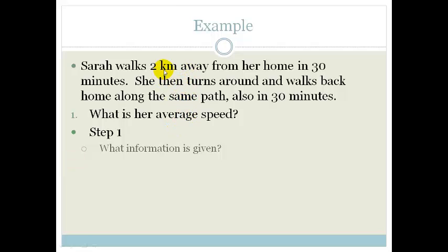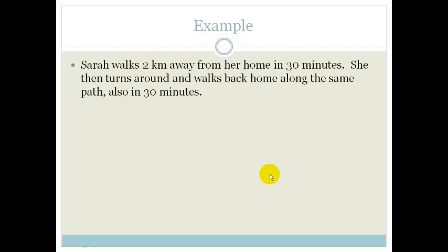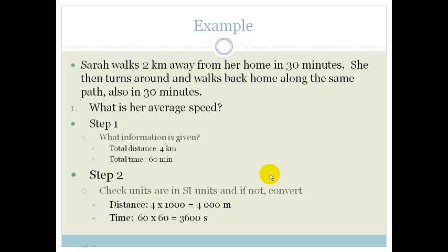So they told us that she walks 2 kilometers away and then walks back along the same path, which means she's traveling 2 kilometers away and another 2 kilometers back. So 2 kilometers and 2 kilometers is 4 kilometers. That's pretty easy. Let's look at the time. She travels 30 minutes away and 30 minutes back. So the total time therefore is 60 minutes. But do you see that this is in the wrong unit. These are in the wrong units. They are not SI units. So we need to convert them.